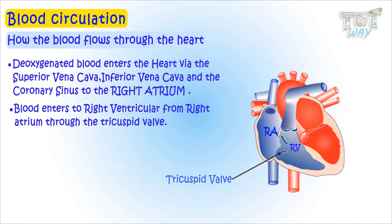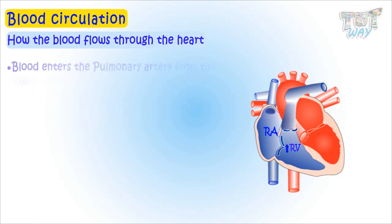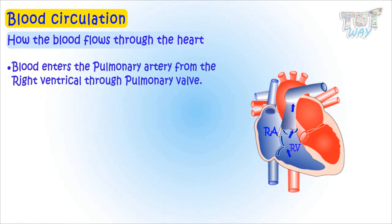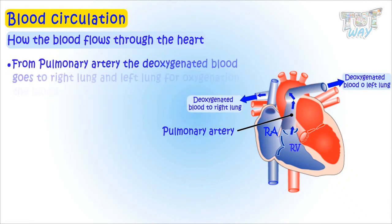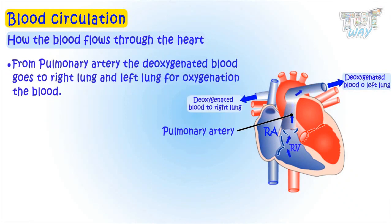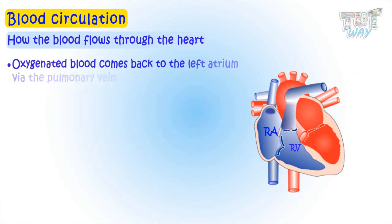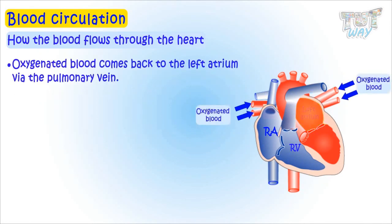Blood is then forced out of the right ventricle and passed to the pulmonary artery, from where the blood flows to the left and the right lung, where the blood is oxygenated. This oxygenated blood comes back to the left atrium via the pulmonary vein.